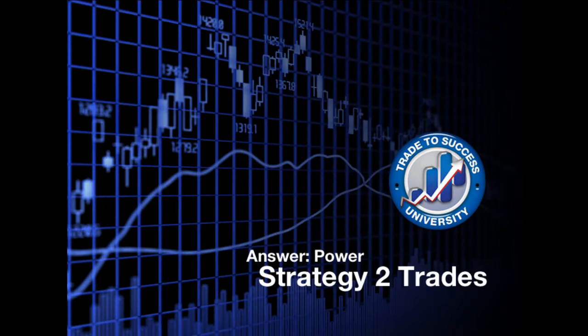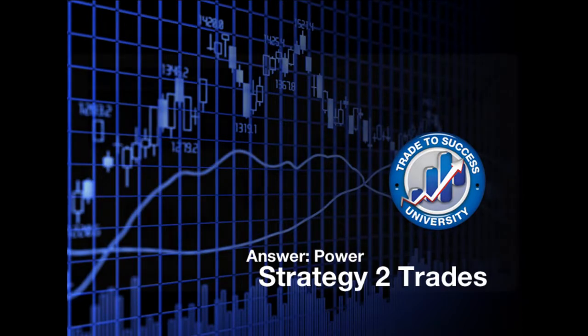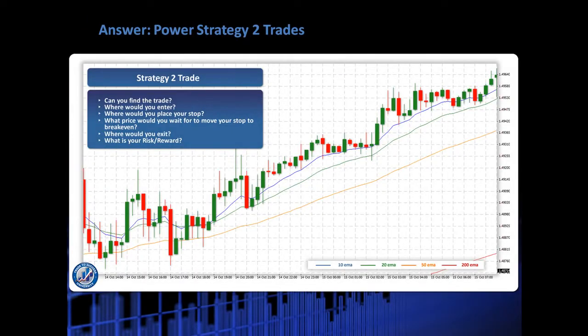Let's go over the answer to this Strategy 2 question. Looking at the chart, we've got a trend up — price is trending up, MAs are trending up, they're in the right direction. What are we actually looking for here? We want to go with price, we want to go with the MAs, and we want to be taking a long trade.